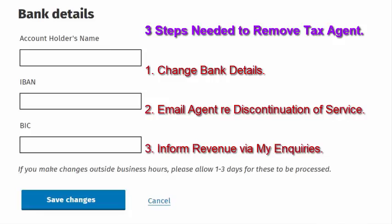These are the three steps you need to take to ensure that an agent is successfully deleted from acting in such a manner on your behalf in the future. The first step is to change bank details on your Revenue My Account to your own, which you have now completed.